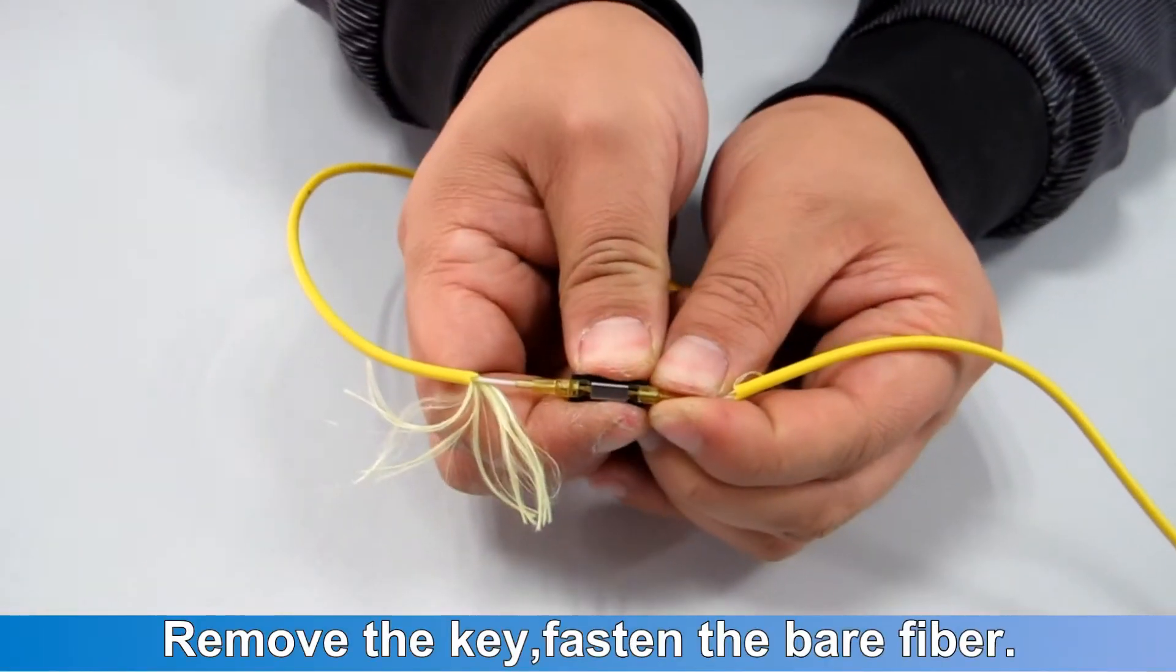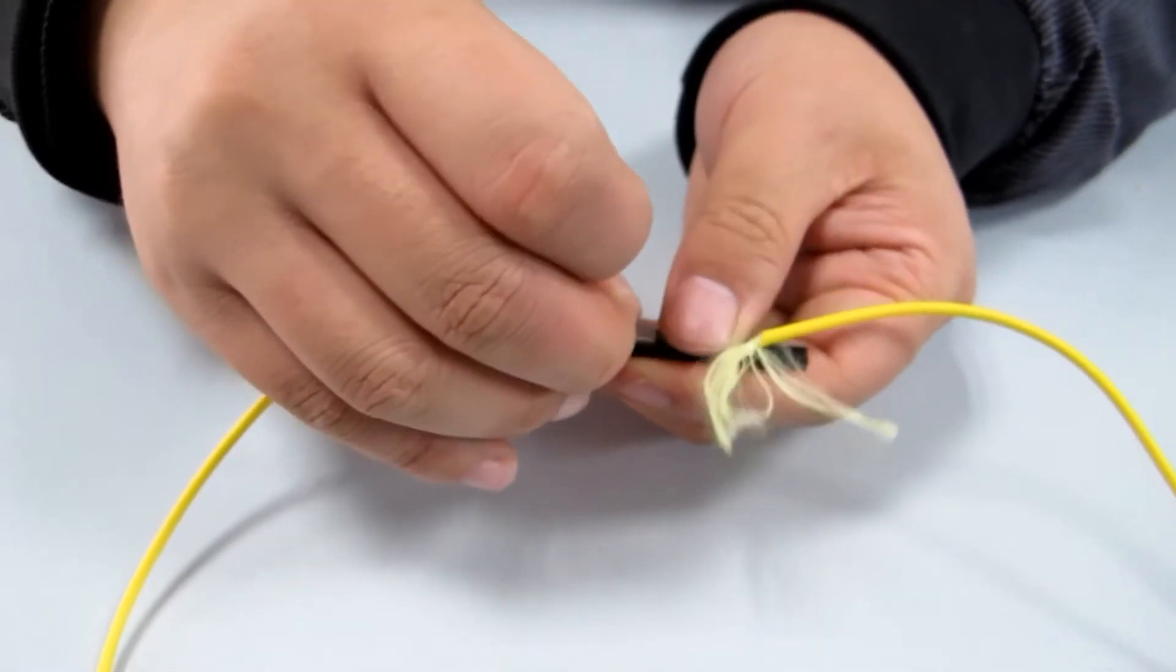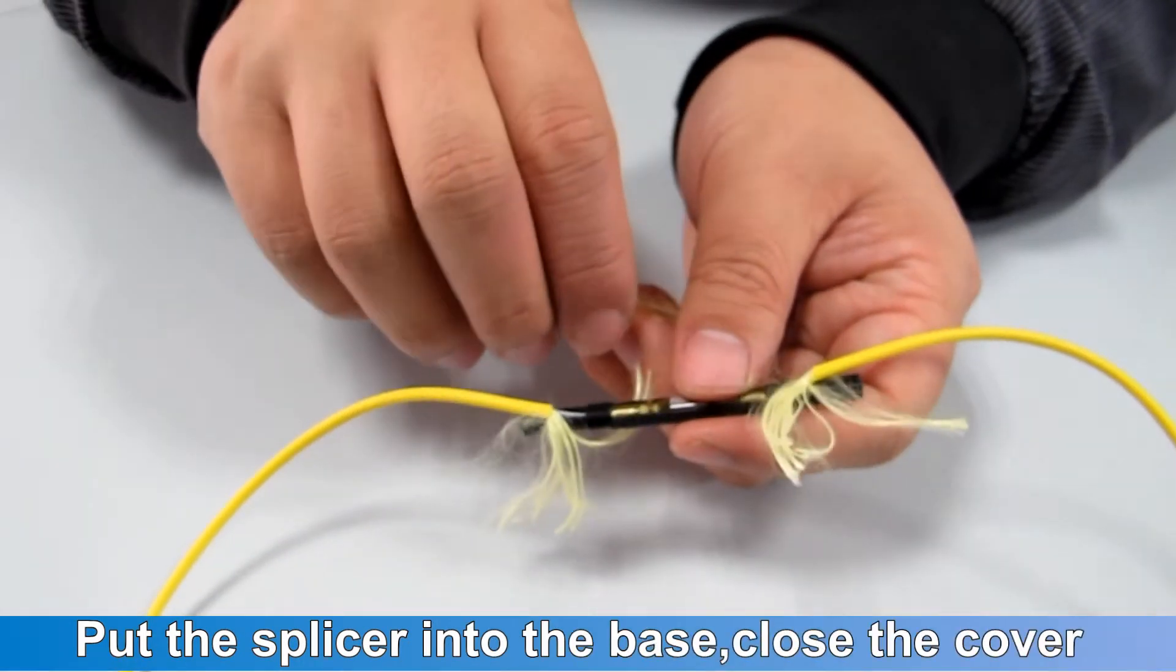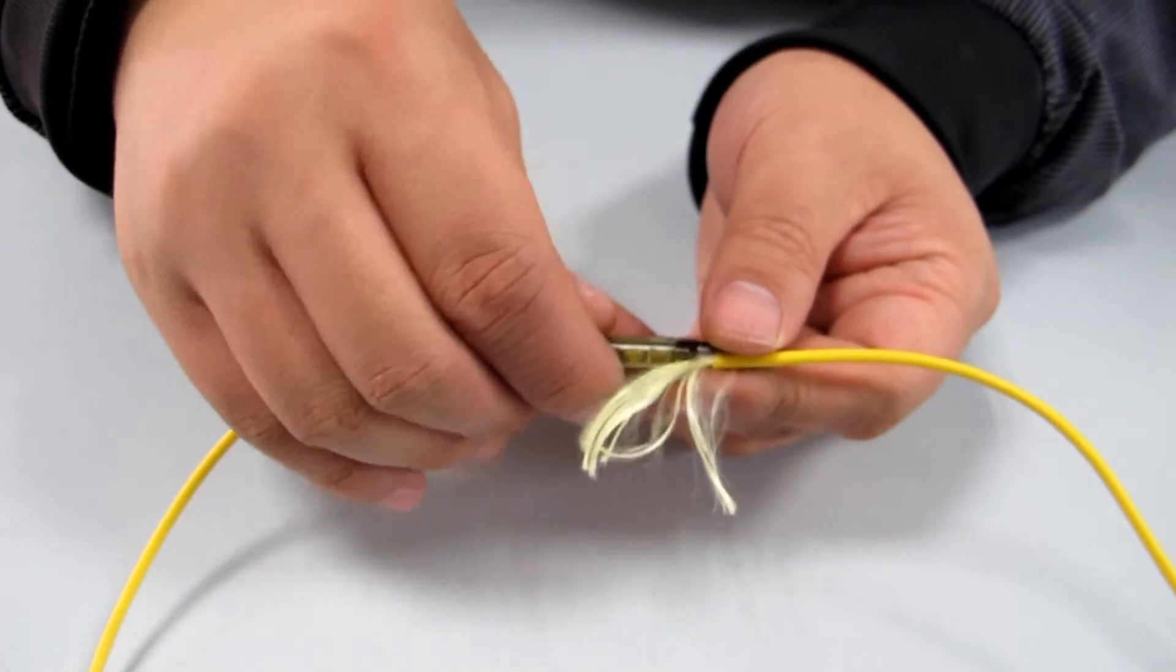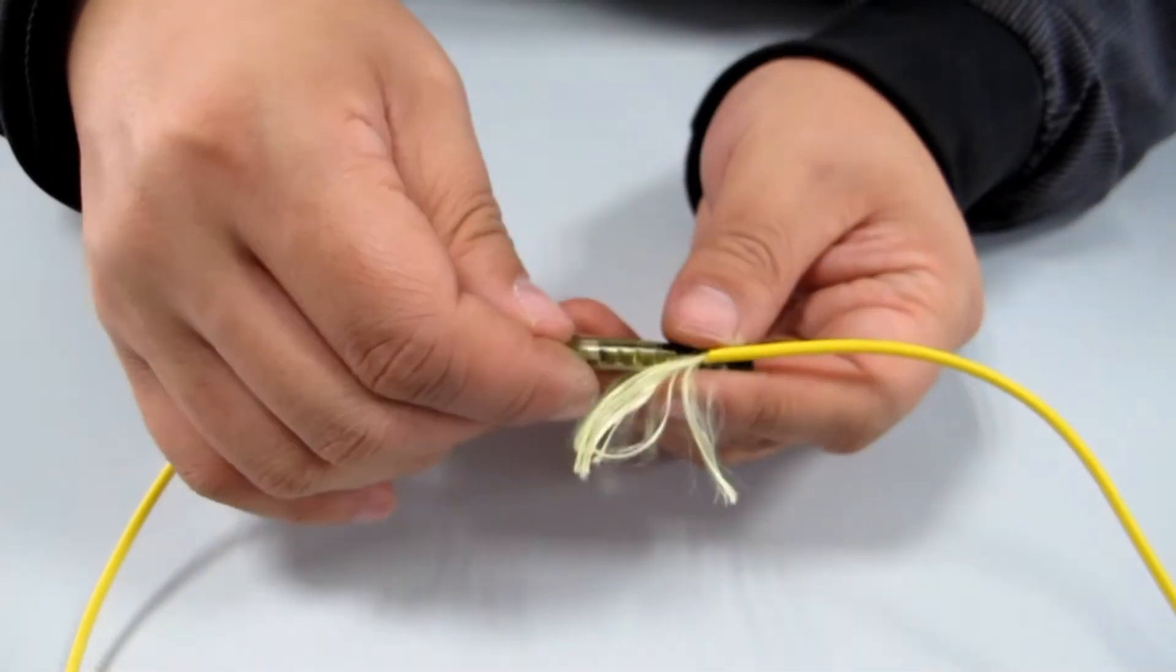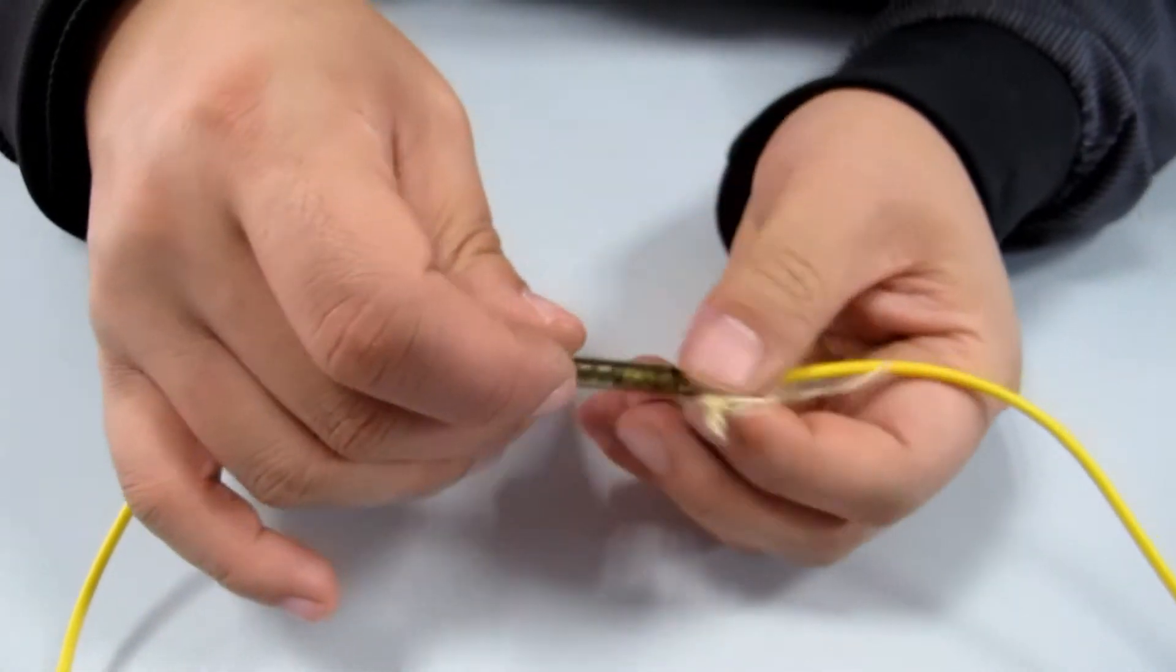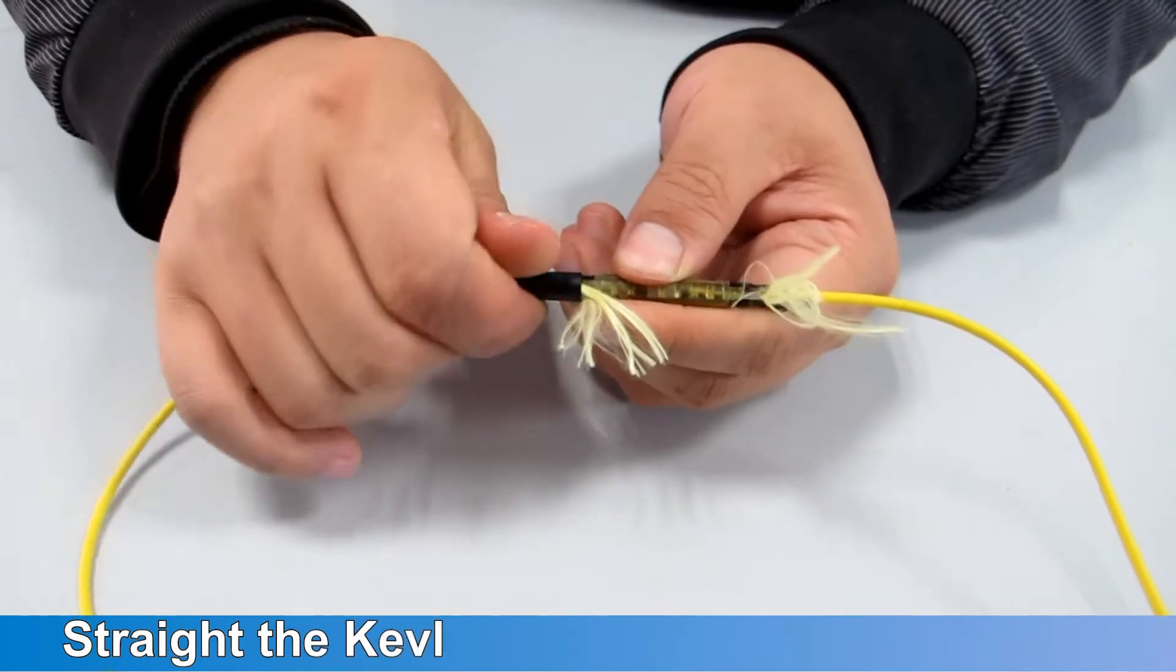Remove the key. Fasten the bare fiber. Put the splice into the base. Close the cover.